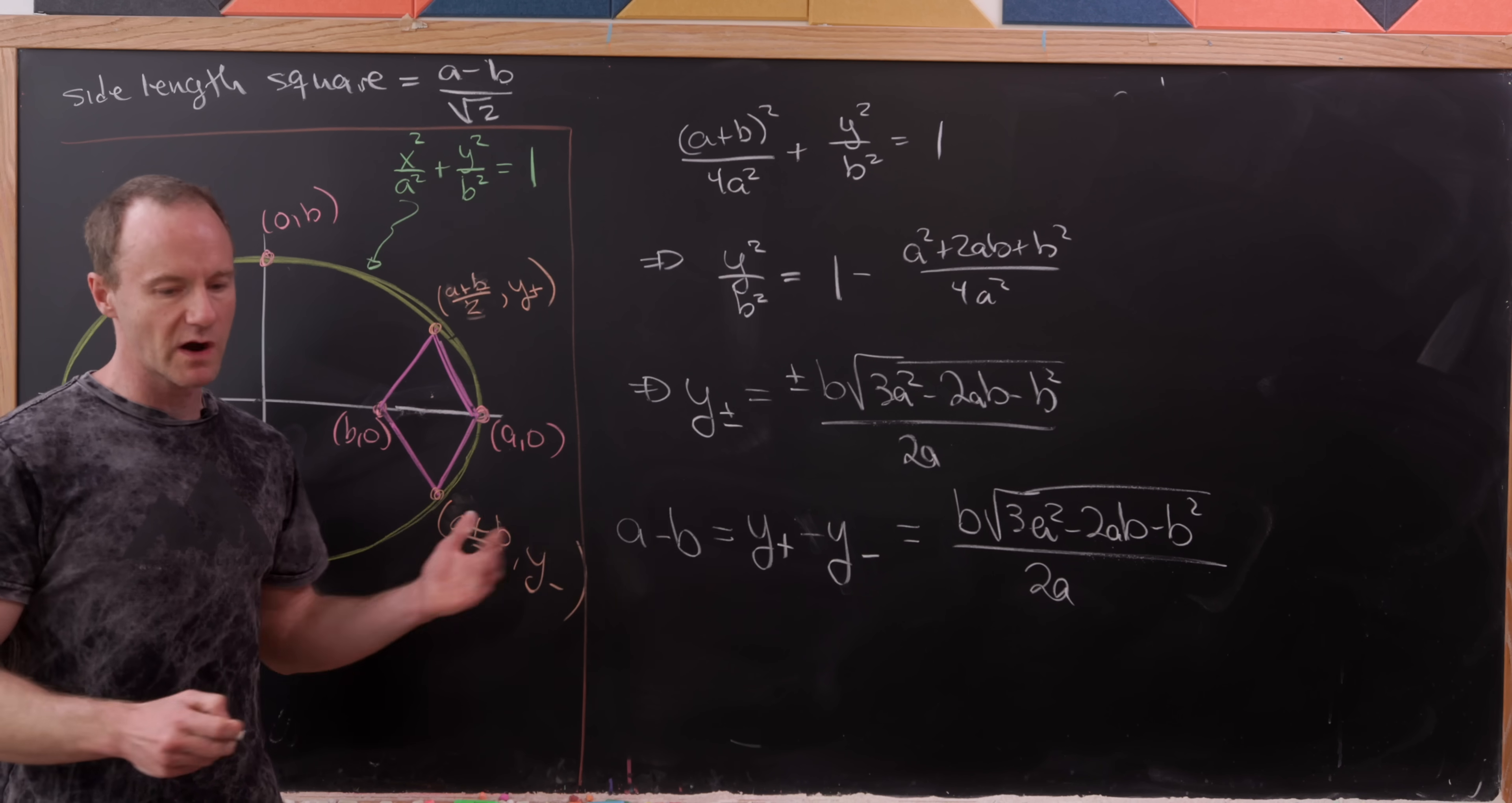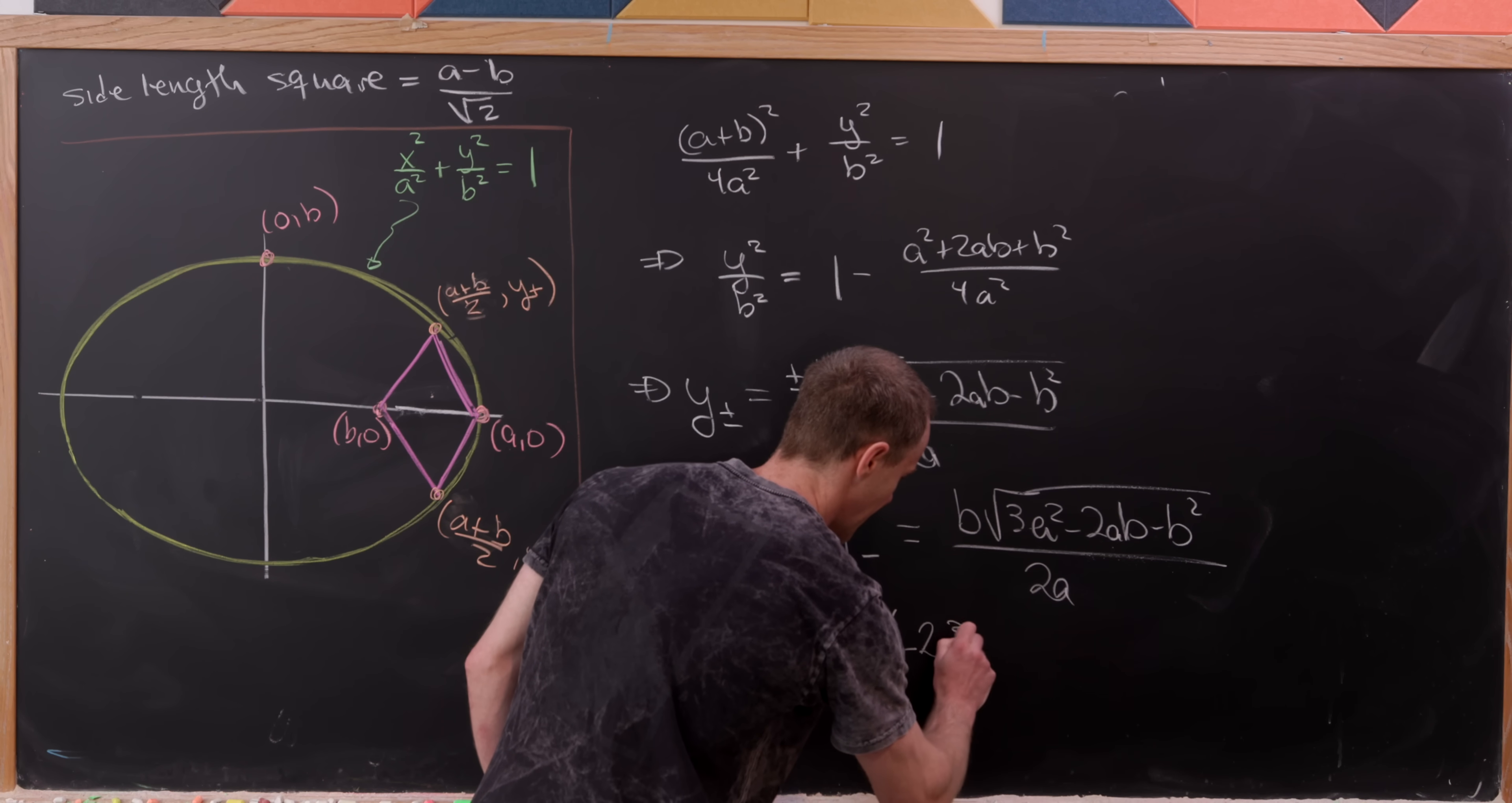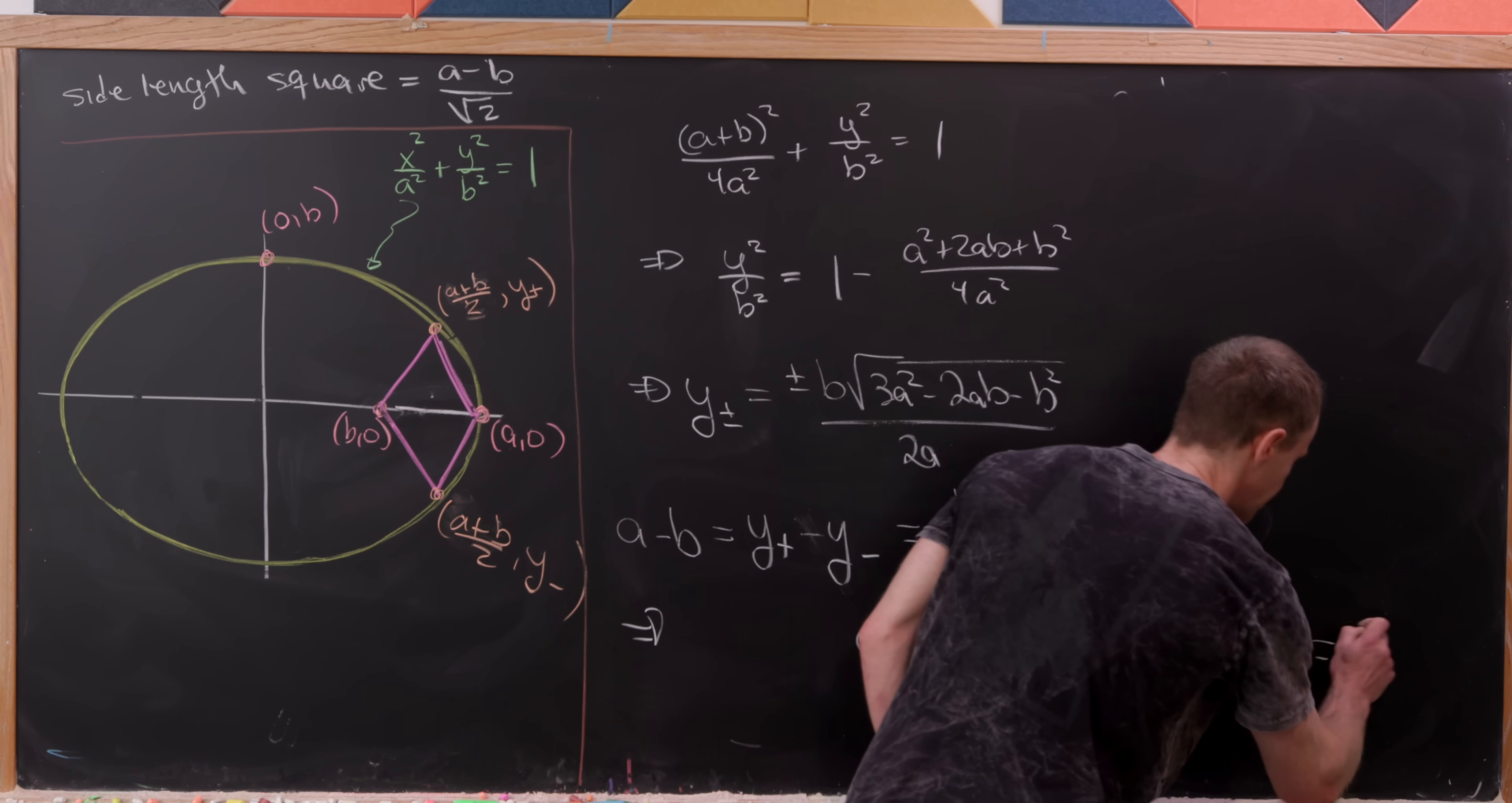But now we can square both sides and rearrange things and we'll see that we get the following equation: a⁴ - 2a³b - 2a²b² + 2ab³ + b⁴ = 0.